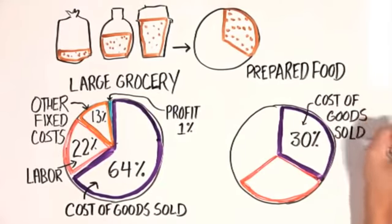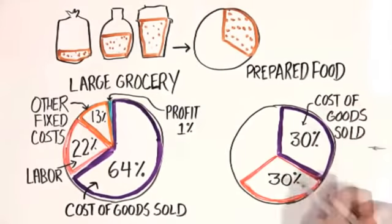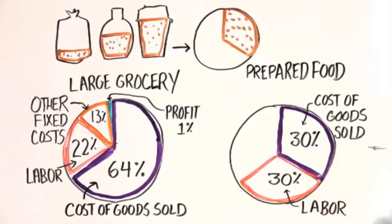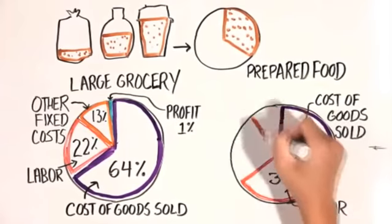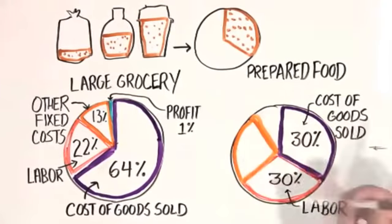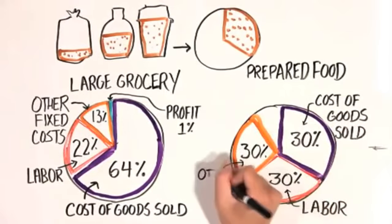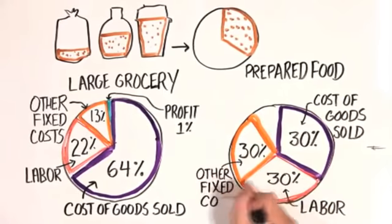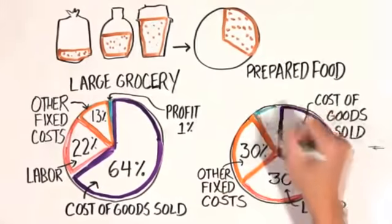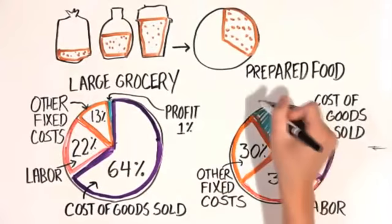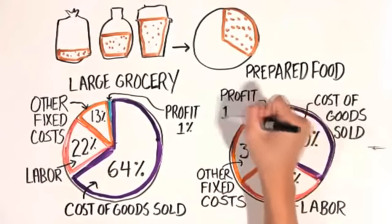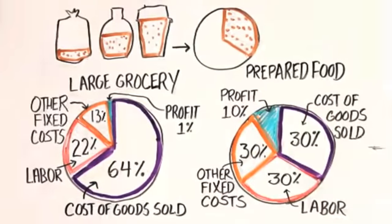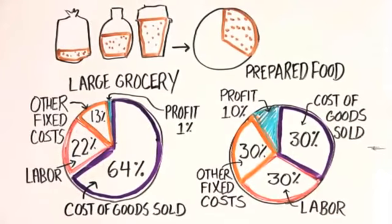A large grocery store spends 22 cents on labor and 13 cents on rent, utilities, and other fixed costs — leaving themselves with one percent in profit. A prepared food business might target 30 cents on cost of goods sold, 30 cents on labor, and 30 cents on other fixed costs, trying to leave themselves with 10 percent in profit — they probably need the extra margin because things can be really volatile for prepared food businesses.